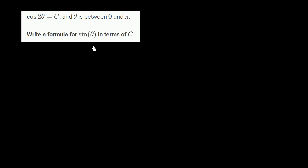I have the exact question copy and pasted right over here. Let's think about it a little bit. They're telling us that cosine of two theta is equal to c. So let me write it this way: c is equal to cosine of two theta.